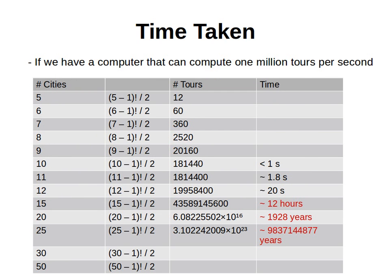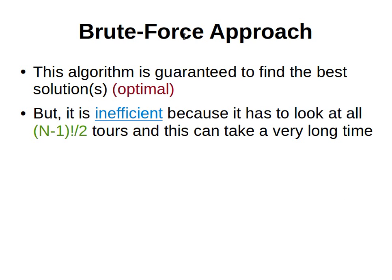This is what I meant by finding a solution in feasible time. It's simply impossible to go through all possible tours when the number of cities is 25, even with a very powerful computer. The brute force approach is guaranteed to find the best solution because it goes through all possible solutions — this is known as an optimal algorithm — but it's not efficient because it has to look at every possible tour, which can take an extraordinarily long time.